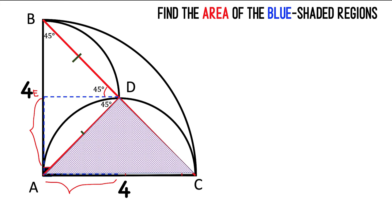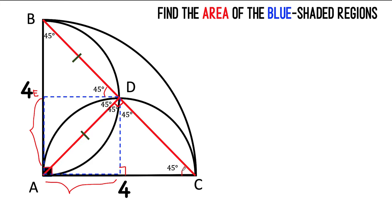In the same manner, considering triangle ADC, this is 45 degrees here, it's 90 degrees here, this must be 45 degrees here, so this side must be congruent to side DC.